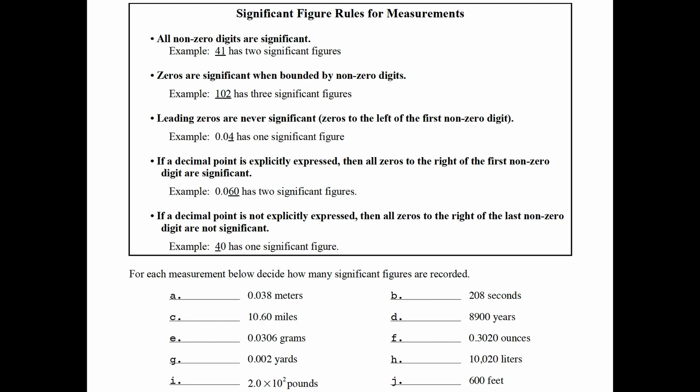And finally, the last rule is if a decimal point is not explicitly expressed, then all zeros to the right of the last nonzero digit are not significant. In the number 40, we see that there's no decimal point and we also see that it has a trailing zero. That zero has to be there in order to tell the scale of the measurement. For example, you couldn't just put 4. You have to put the zero down to convey that it's the scale of the measurement. So that only has one significant figure.